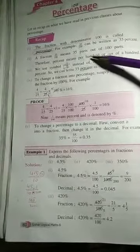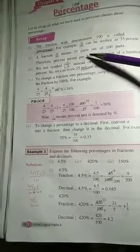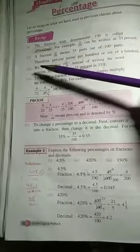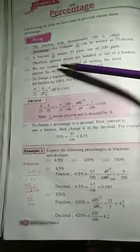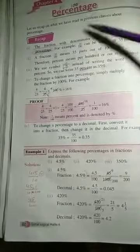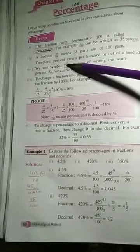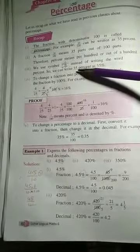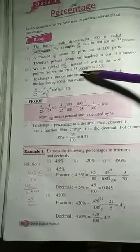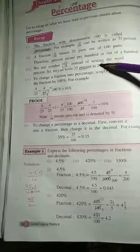percent means per 100. Point 3: We use the symbol percentage instead of writing the word percent. So we can write 35% as 35% using the percentage symbol.